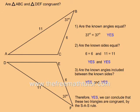Question 3 says, are the known angles included between the known sides? In both cases, yes, the 37 degree angle is included between the 6 unit and 11 unit sides. Therefore, yes, we can conclude that these two triangles are congruent by the SAS rule.